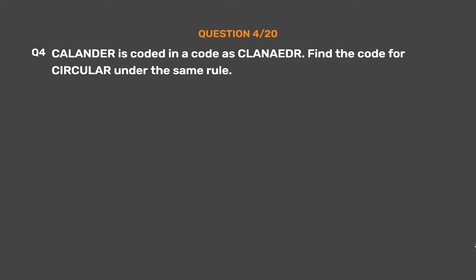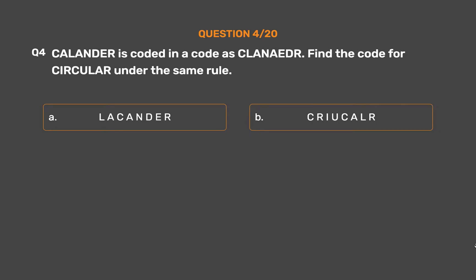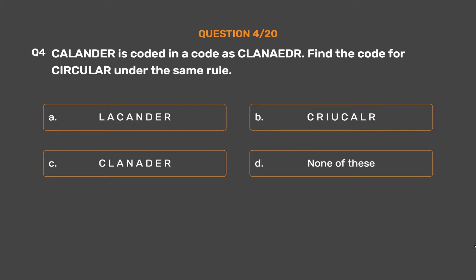Question number 4: 'Calendar' is coded as 'CLANAAR'. Find the code for 'circular' under the same rule. Option A: LACANDER. Option B: CRIUCALR. Option C: CLANATER. Option D: None of these.